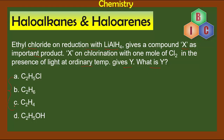Let's look at all four options: option A is C₂H₅Cl — ethyl chloride; option B is C₂H₆ — ethane; option C is C₂H₄ — ethylene or ethene; and option D is C₂H₅OH — ethyl alcohol or ethanol.